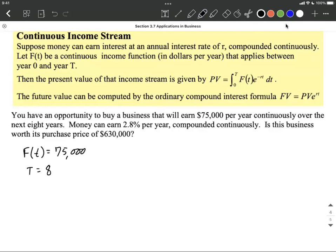Now we know that money can earn 2.8% per year. So that's our rate R, 2.8%, but we want to make that into a decimal. So two decimal places over, 0.028. It's going to be filled into our function. So is the business worth the purchase price of $630,000?